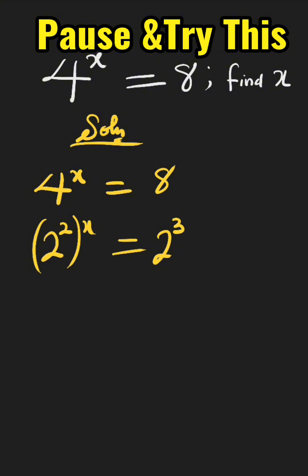Now we can multiply the powers, which will give us 2 raised to the power of 2x, equal to 2 raised to the power of 3.